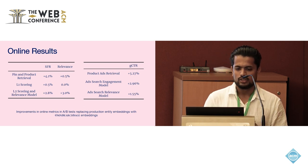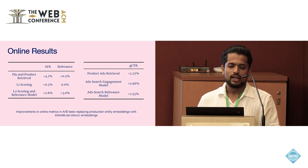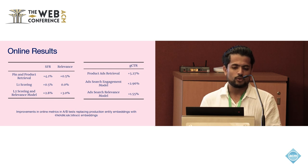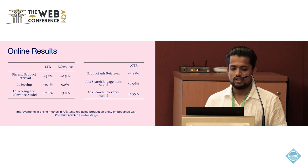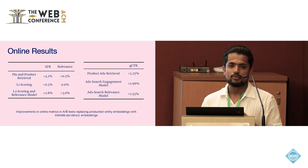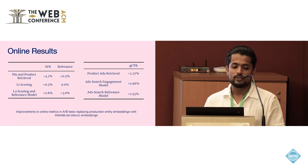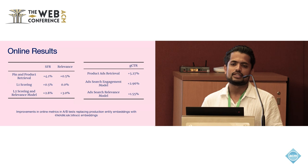We measured online performance using search fulfillment rate — the ratio of search sessions that have at least one user engagement. Historically, even a 0.5% improvement is considered significant for this metric. Over 10-plus launches, OmniSearch has led to over 7% improvement in search fulfillment rate and over 8% improvement in click-through rate for search ads. It has also led to significant improvement in relevance, particularly for tail queries, which are more specific and harder to capture using non-embedding-based techniques.